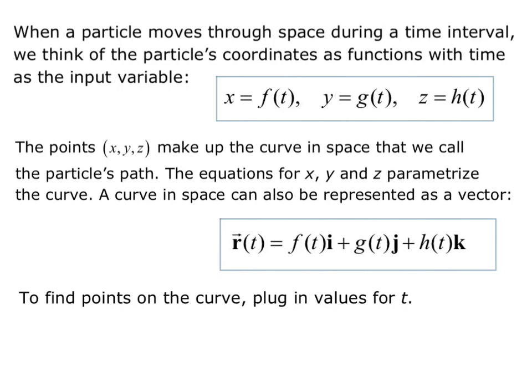To find points on the curve, we plug in different values for t. So at different times, your particle will be in different points in space.